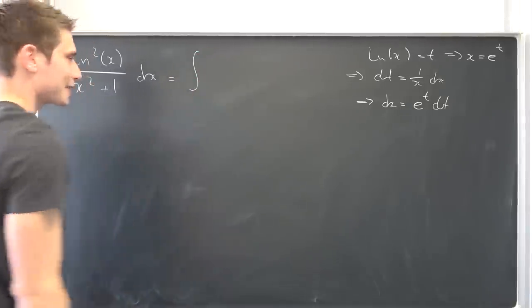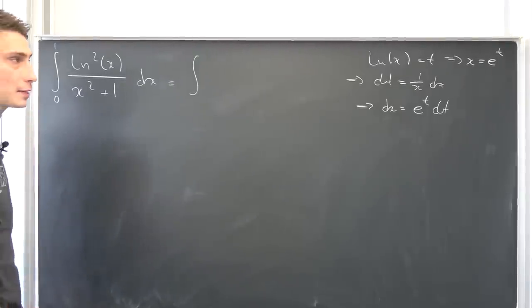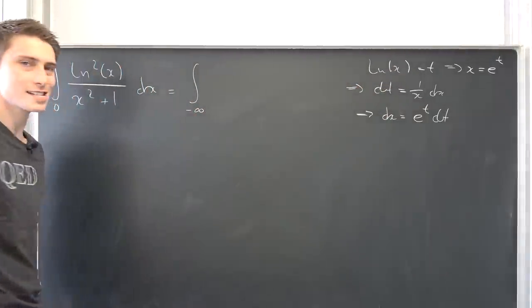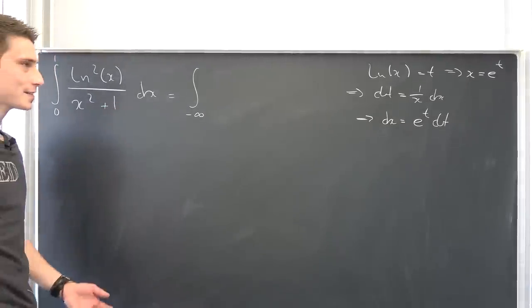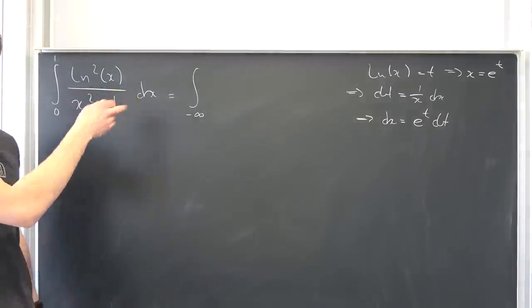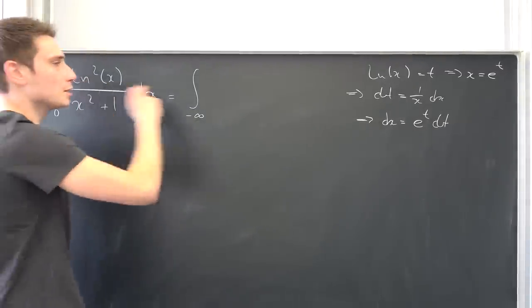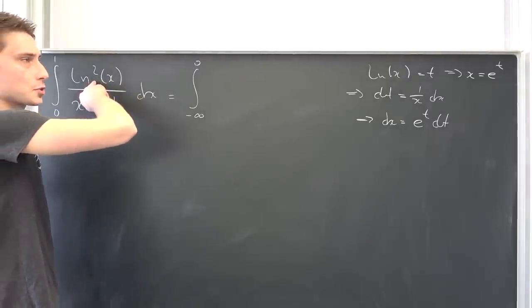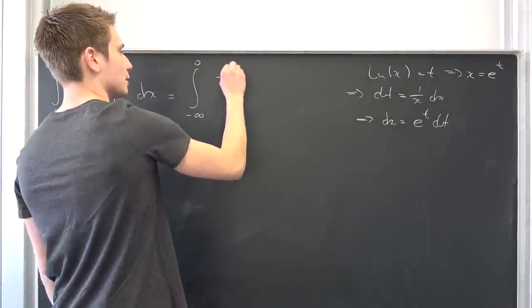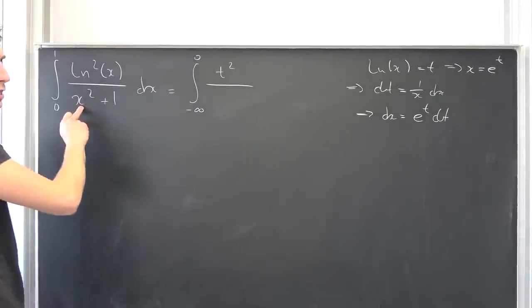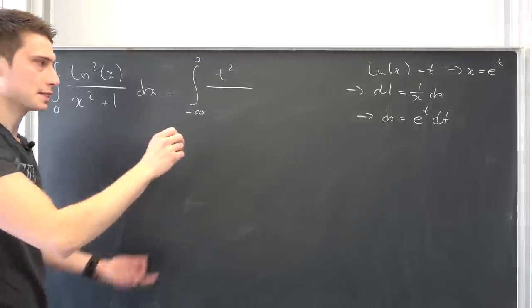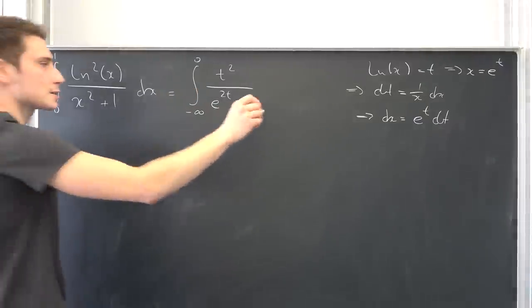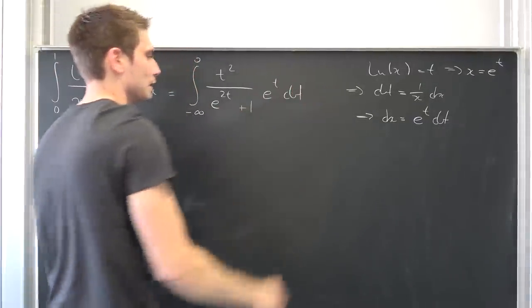We can plug this chunk in here. Let's take a look at the upper and lower bounds. They are going to change respectively. If we plug 0 into our natural log, it's going to diverge to negative infinity. Yet another improper thing. It always was improper. And if we plug 1 into here, natural log of 1 is just 0. Then we get natural log of x squared, this is going to give us t squared. x squared is going to give us e to the 2 times t plus 1, times dx which is nothing but e to the t, integrated with respect to t.